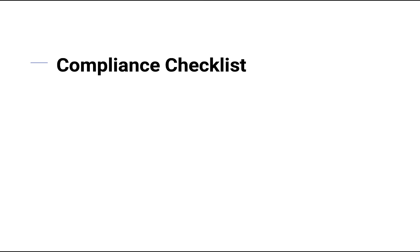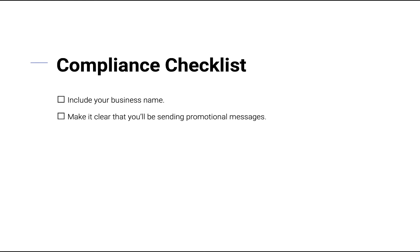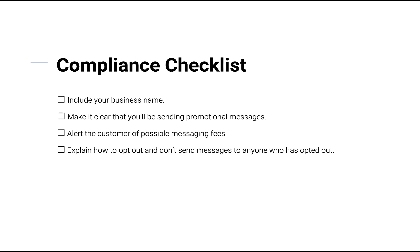At a minimum, the subscriber opt-in process should identify your business's name, make it clear that you'll be sending promotional messages, alert them to possible text messaging fees, and explain how to opt out of future messages.